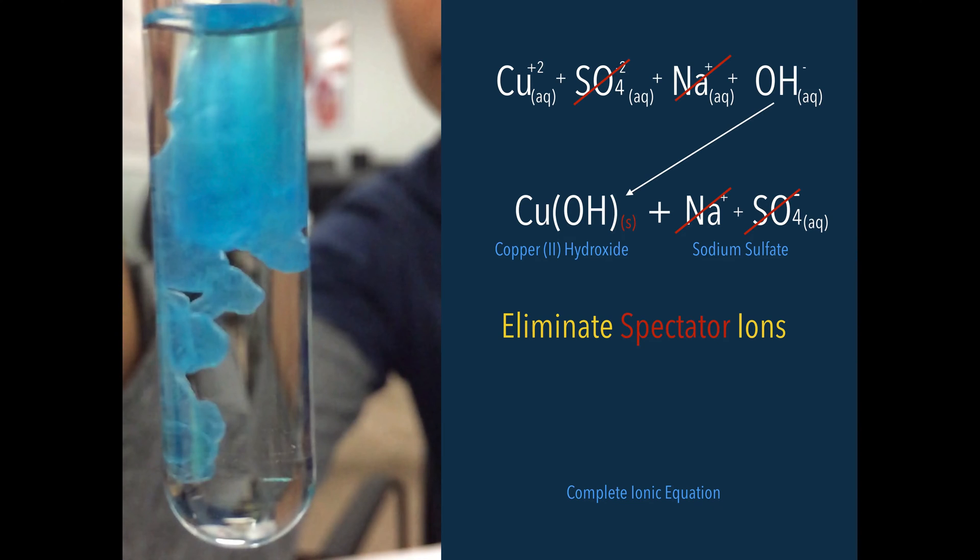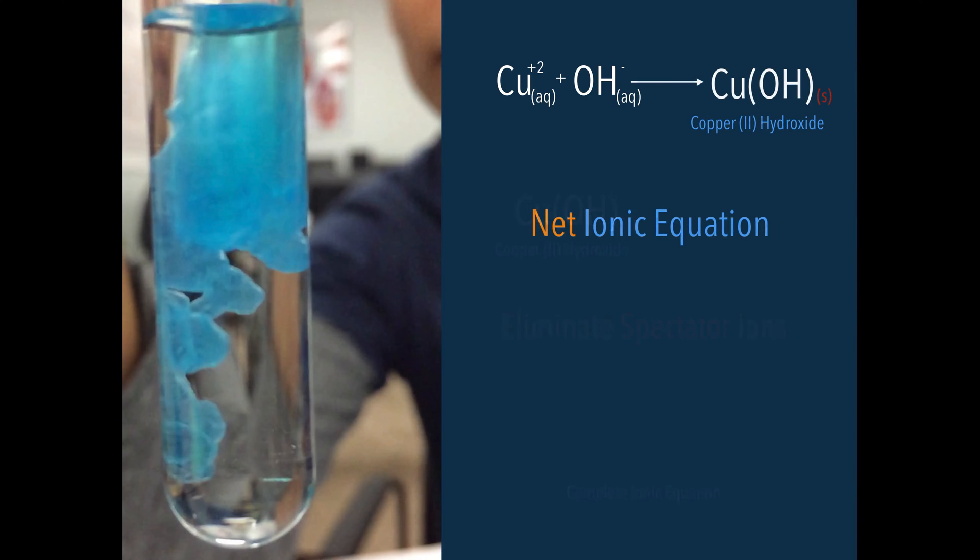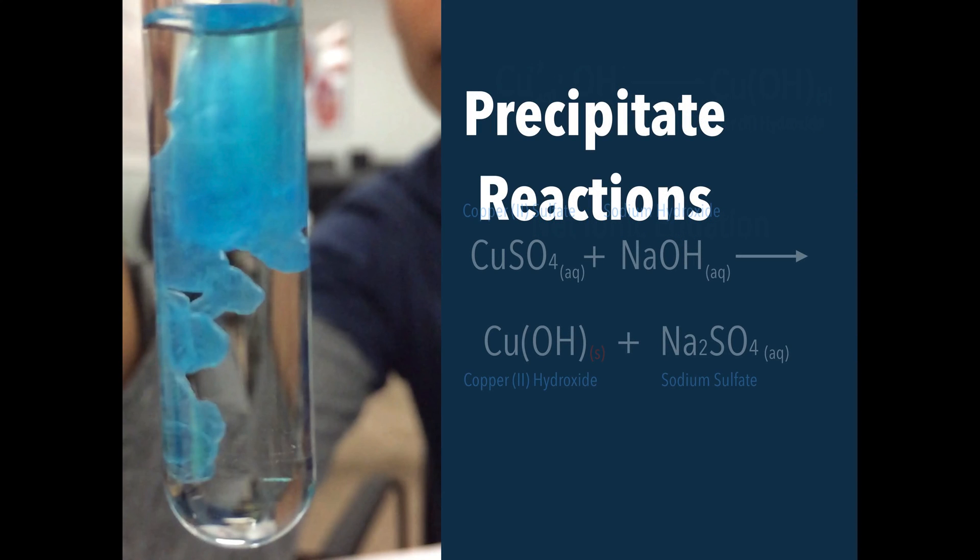We're cleaning up our equation: Cu²⁺ plus OH⁻ reacts to produce Cu(OH)₂ solid - that is the precipitate. This is the net ionic equation when I write in just those that are involved in the actual reaction. That does it for this video on precipitate reactions.